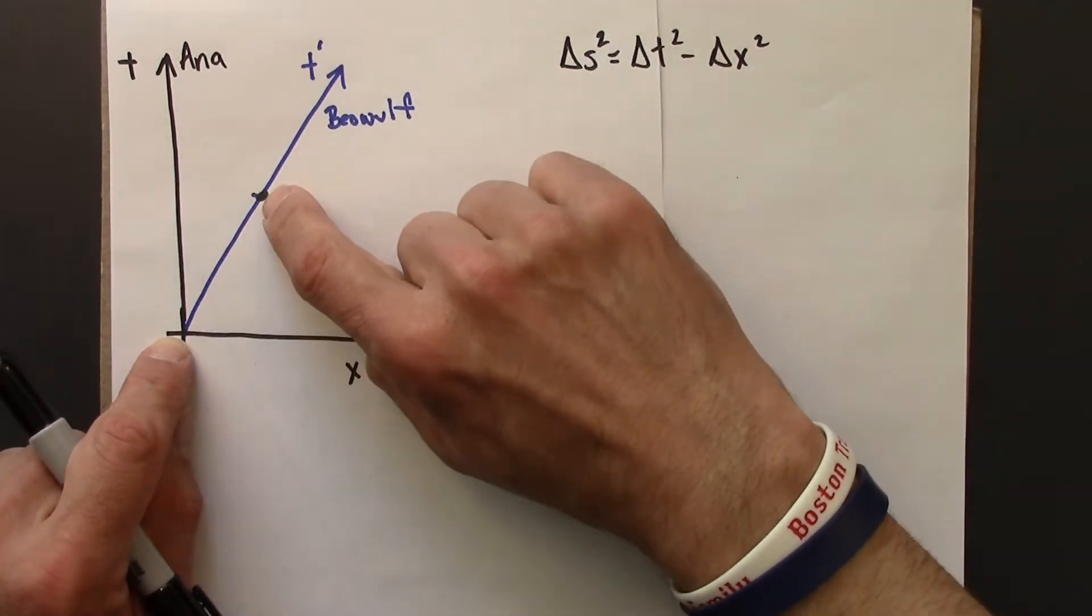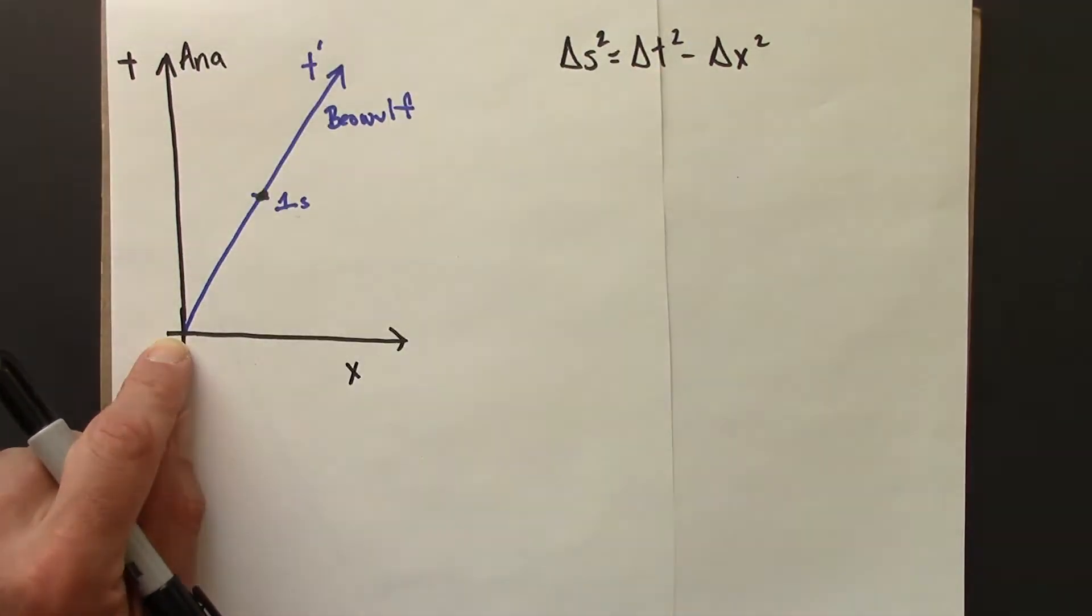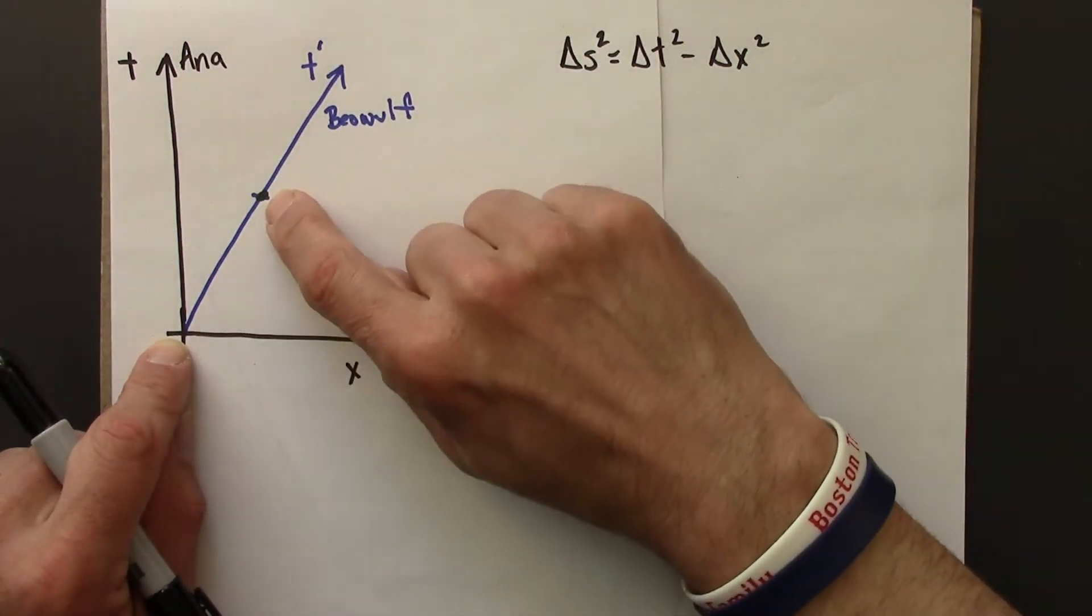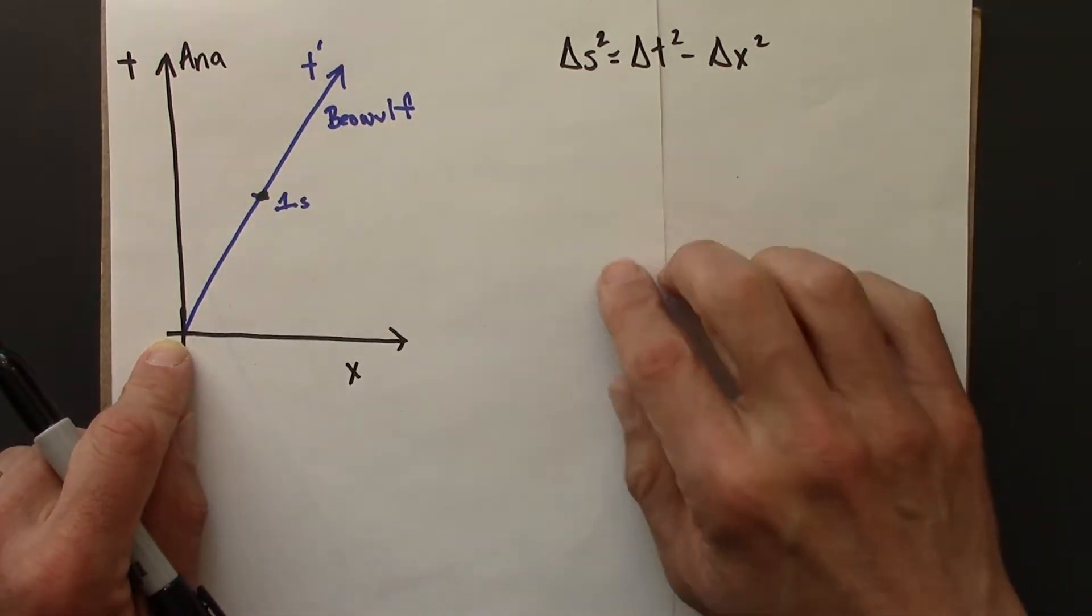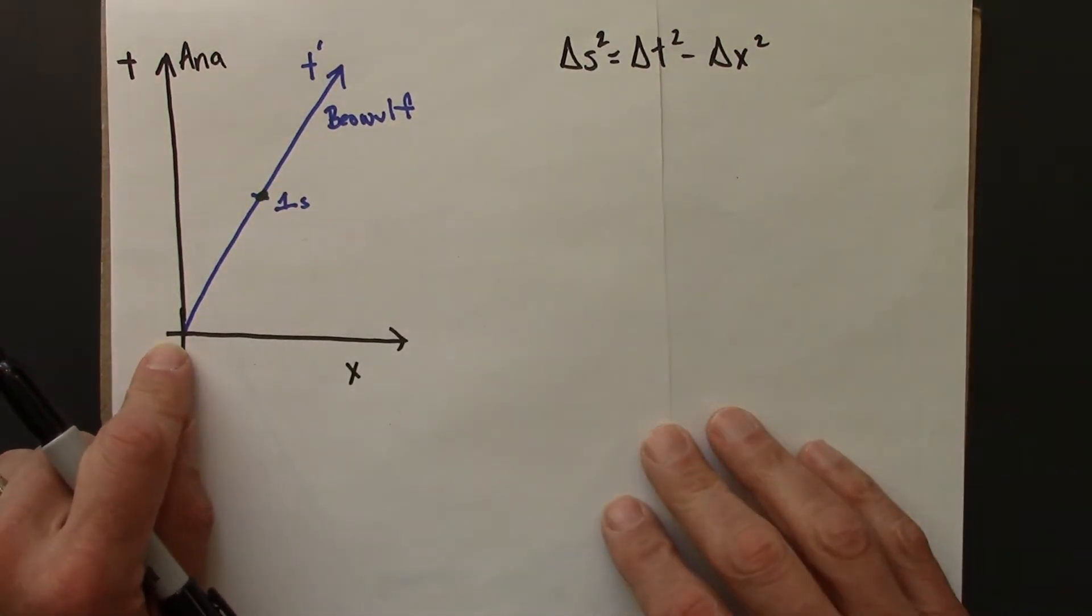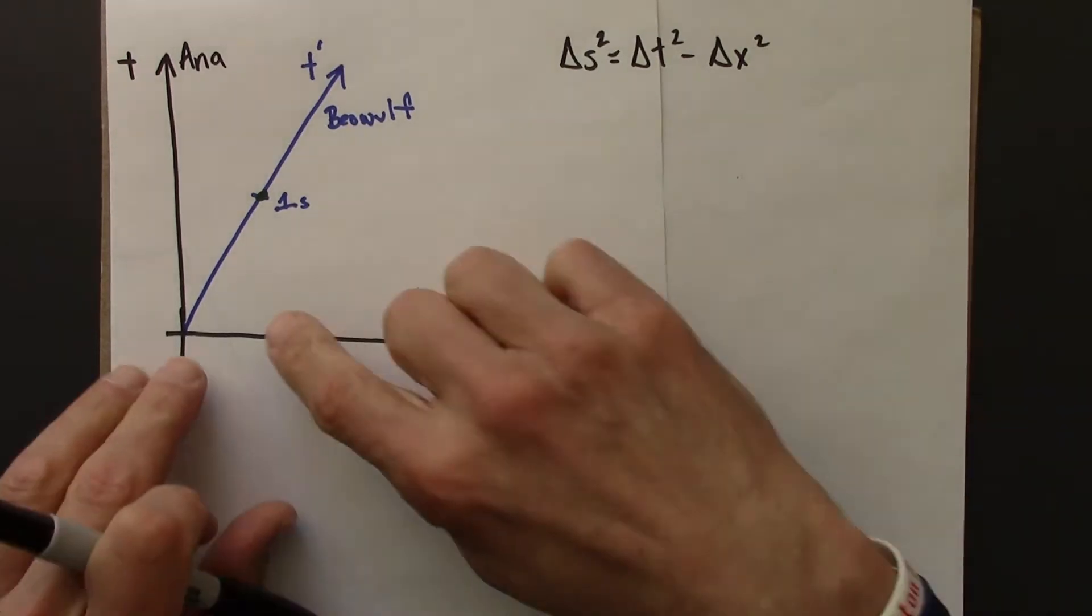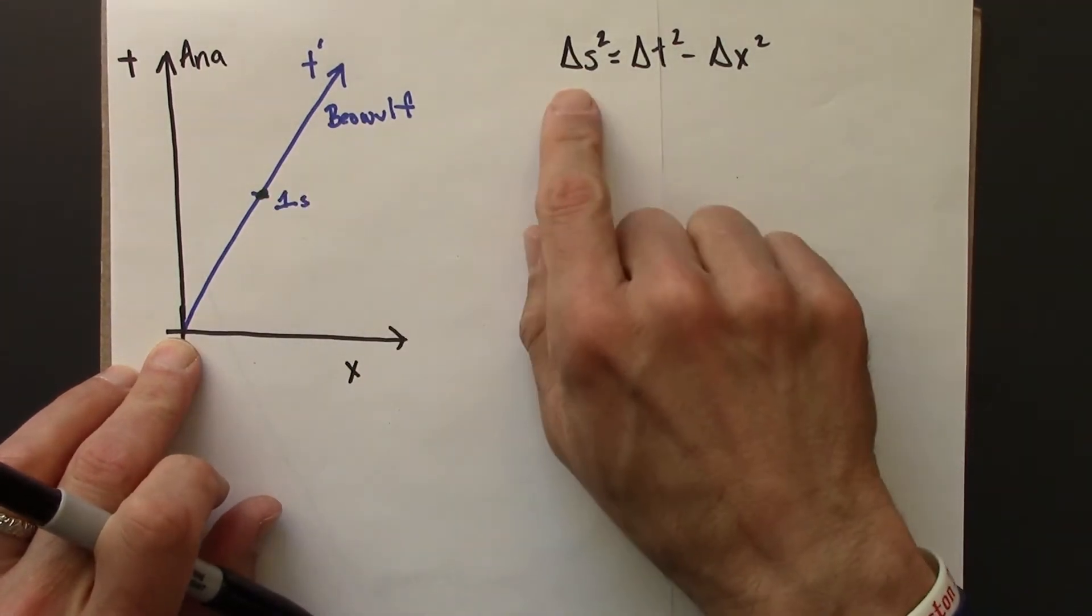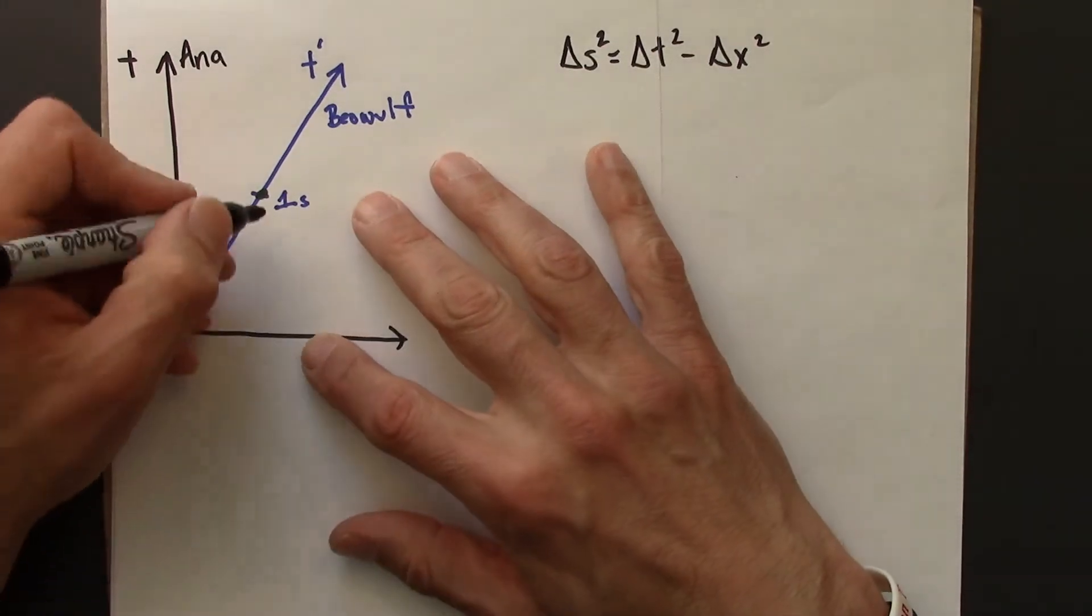this is a spacetime interval. Here is an event. Here is an event. There is a single clock, the one that Beowulf is carrying with him. It's inertial, it's present at both events. That's measuring the spacetime interval. So the spacetime interval for this is 1. And then that spacetime interval is going to have the same value in any inertial reference frame. This is frame independent, just like distance is coordinate independent.